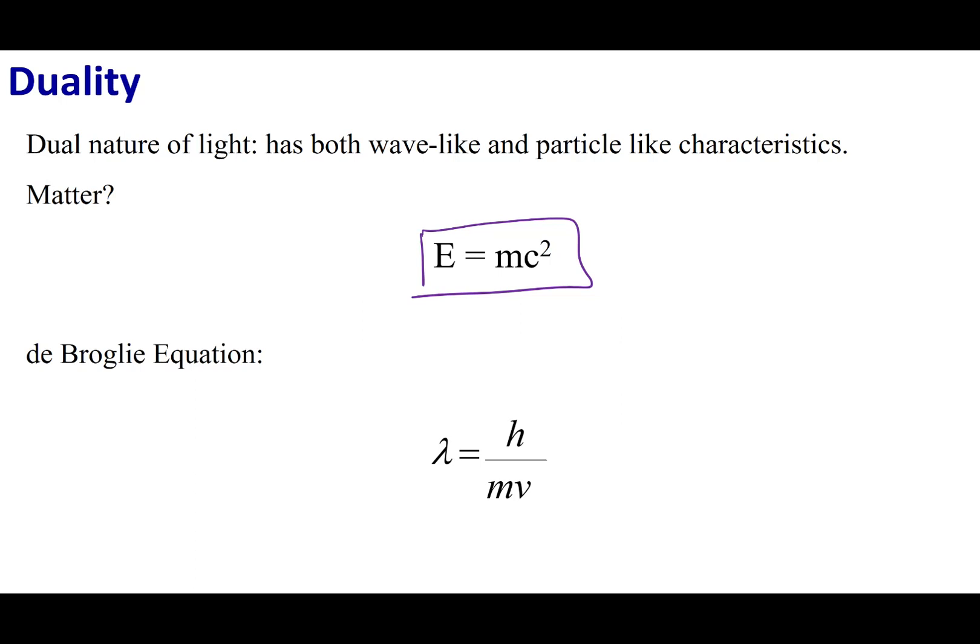To go further, de Broglie theorized that the wavelength of a physical object is going to be dependent on its mass, its velocity, and Planck's constant. So be careful right here. This v right here does not stand for frequency. This is velocity. I know that gets confusing, but I just want to highlight that fact when you use the de Broglie equation.